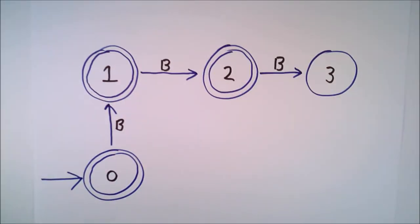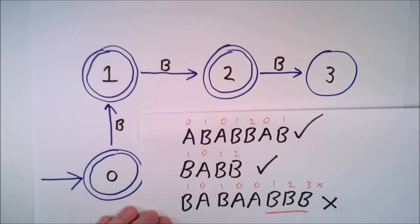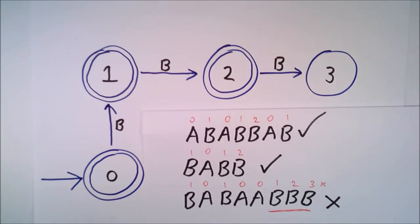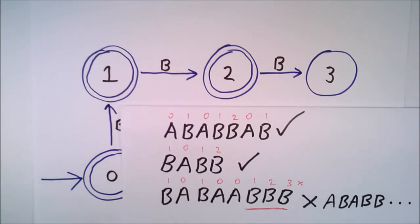We get to state three after three B transitions in a row. So, this must be our non-accepting state. No matter what character we put in after this, we already know that there have been three Bs in a row, and so the string is not acceptable.